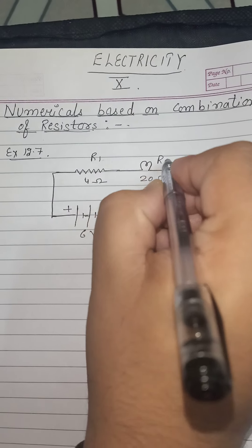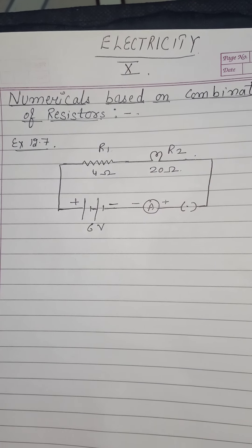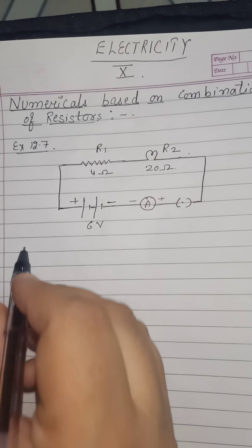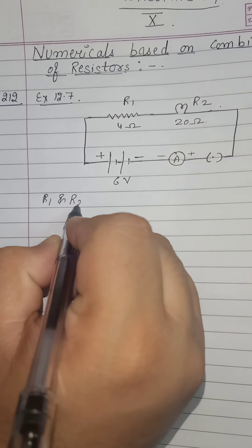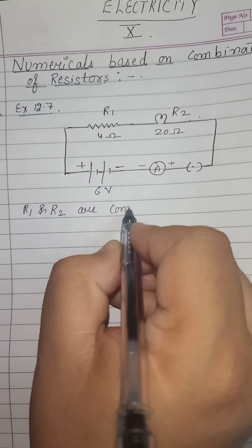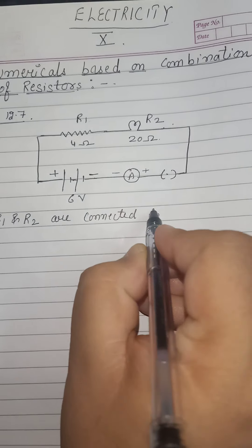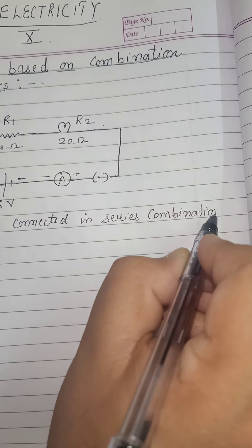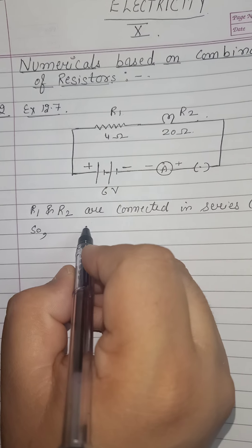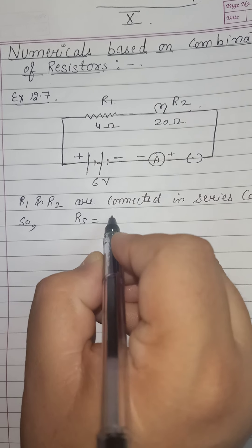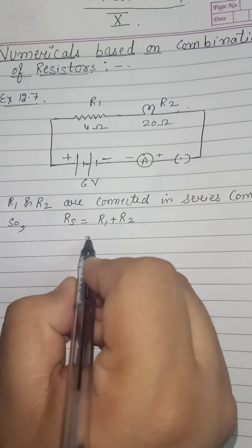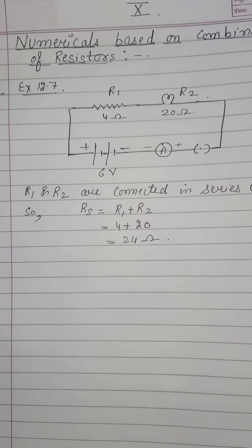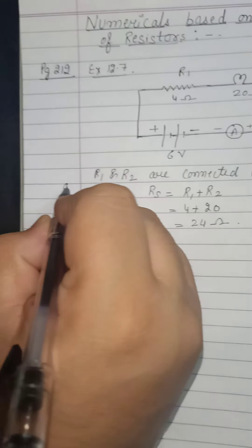Let the conductor be R1 and let the lamp be R2. For part A, we need to find the total resistance of the circuit. R1 and R2 are connected in series combination, so Rs will be equal to R1 plus R2, that is 4 plus 20. The equivalent resistance of the circuit is 24 ohm.